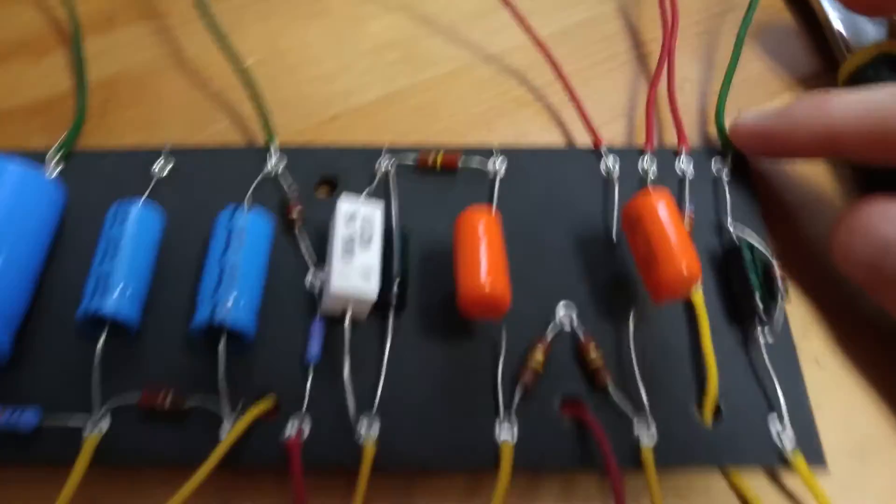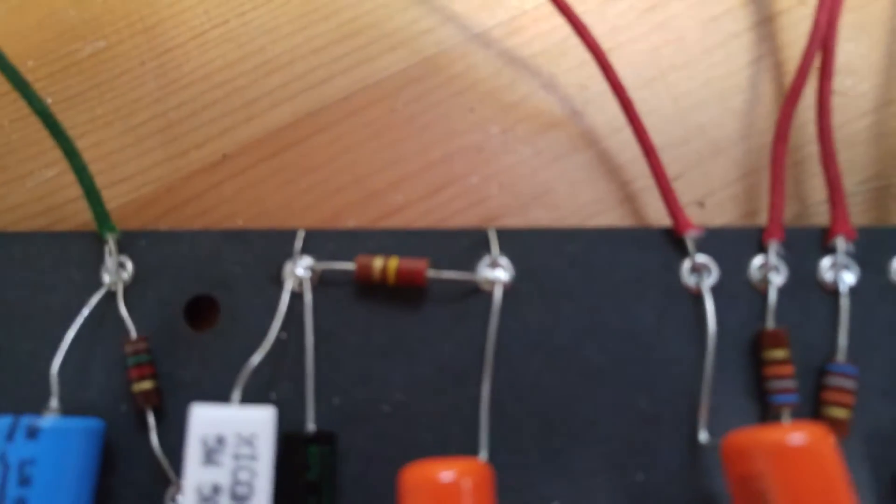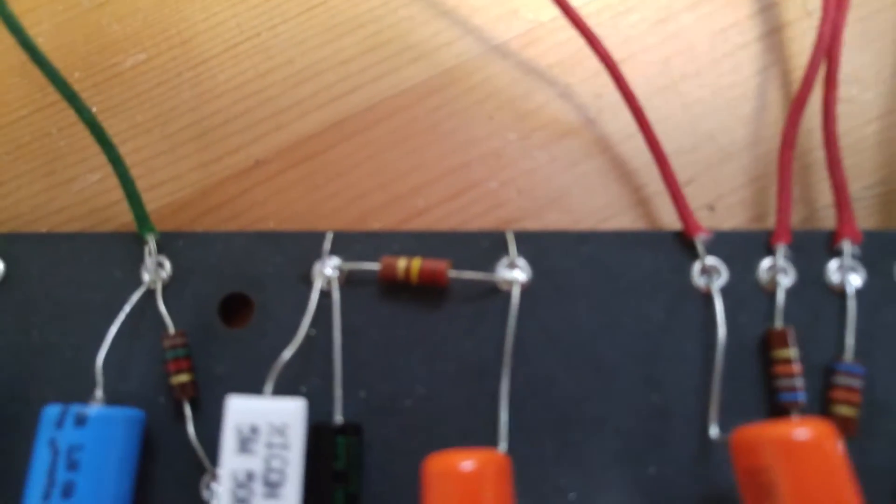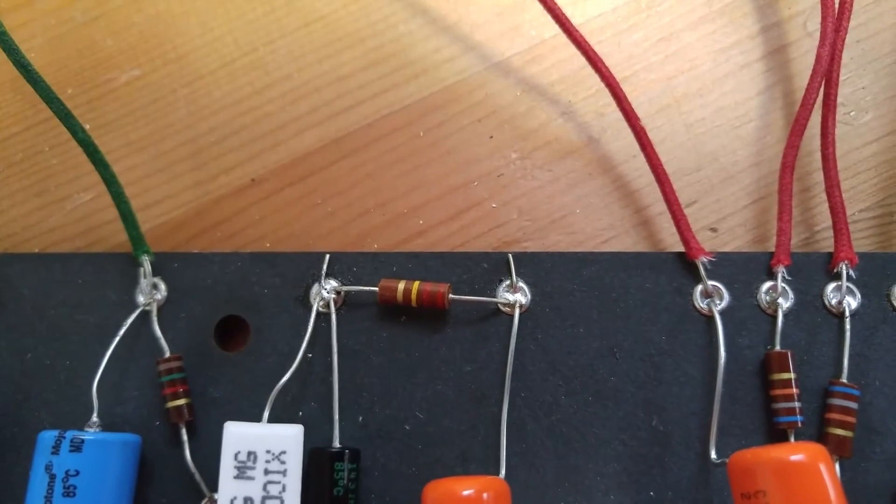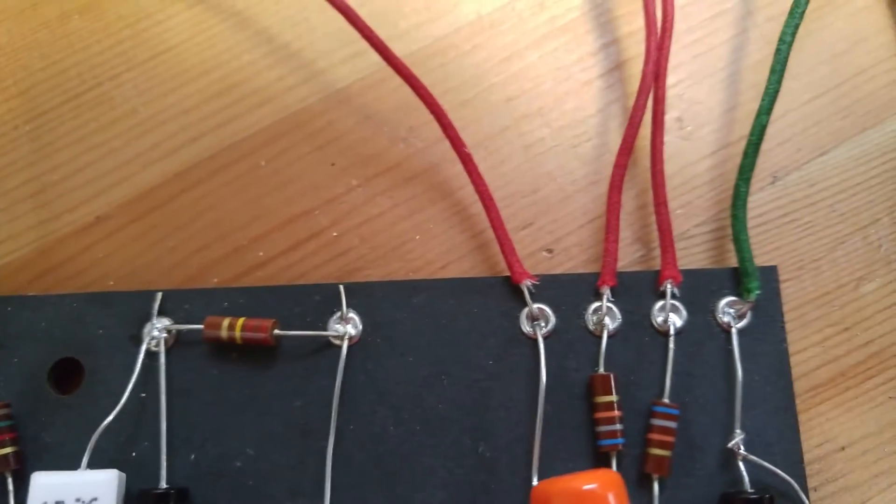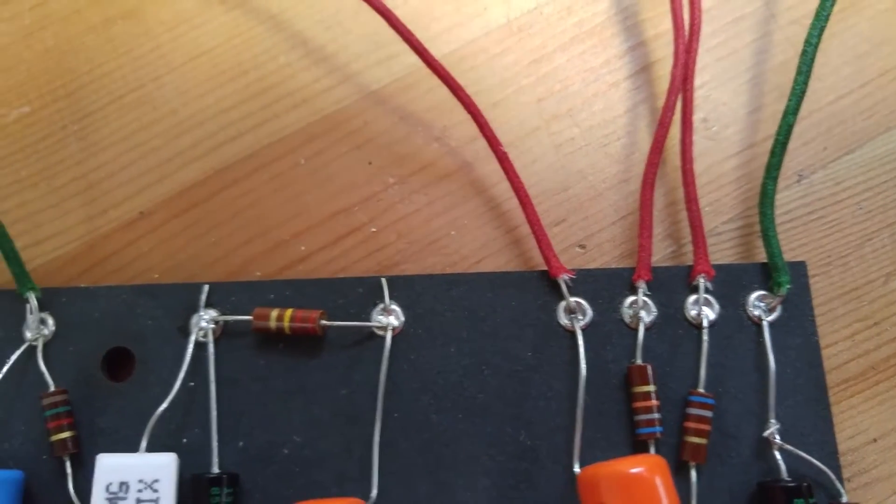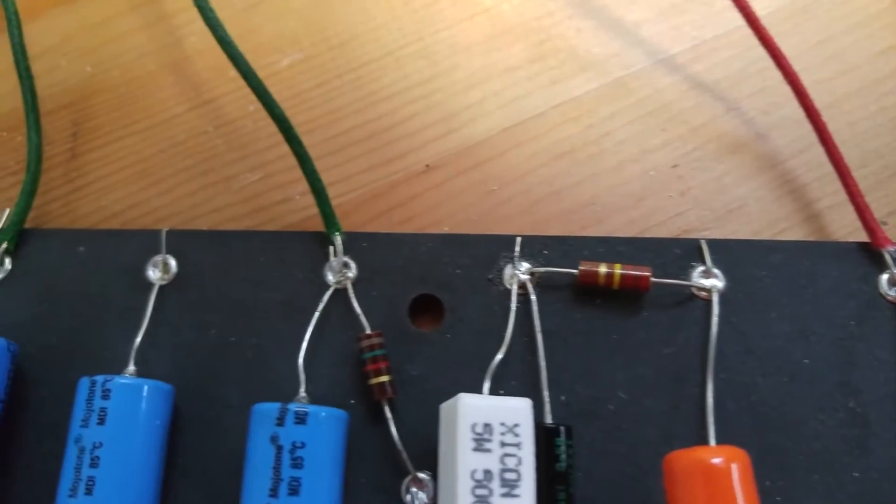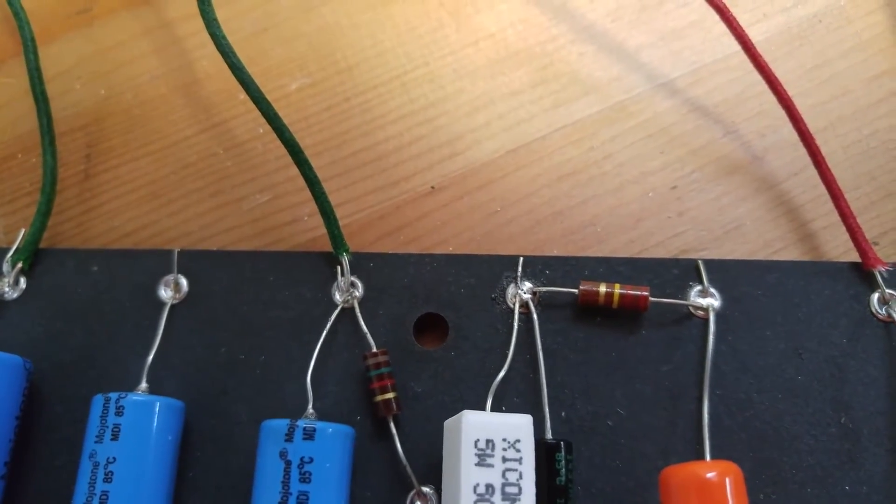Get it nice and soldered. You want to make these soldering joints look nice and shiny. You can see they don't look dull or anything like that. They look nice and shiny. That's exactly what you want to see.